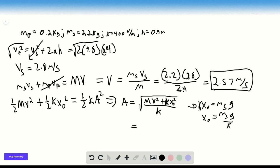So then we can replace X naught for this quantity here. We have the square root MV squared plus K M S G over K squared over K. If we plug all these quantities in, we get 0.21 meters.